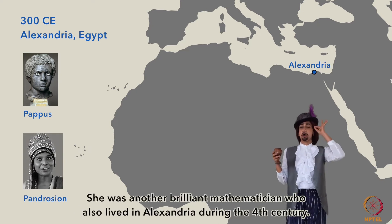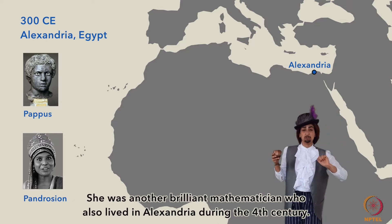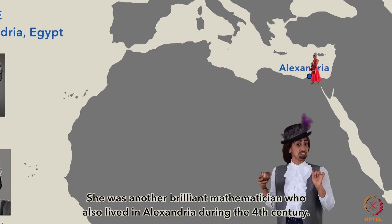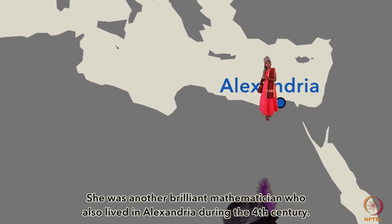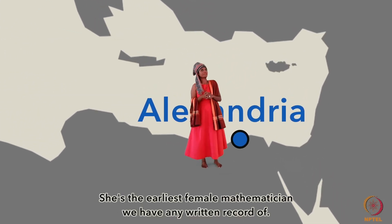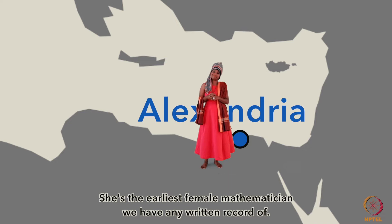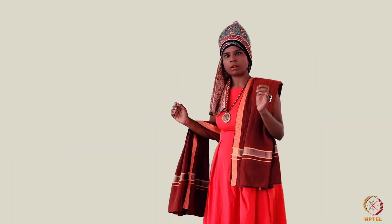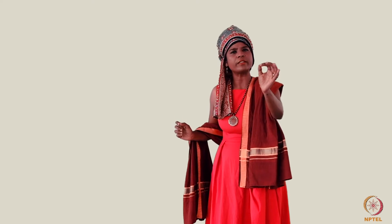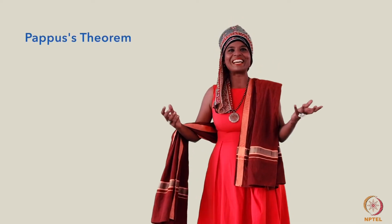Perhaps Hypatia can tell you about his theorem. She was another brilliant mathematician who also lived in Alexandria during the 4th century. She's the earliest female mathematician that we have any written record of.